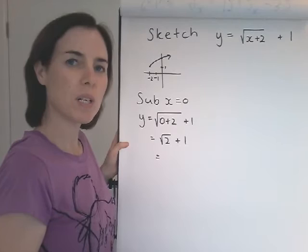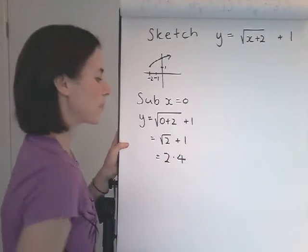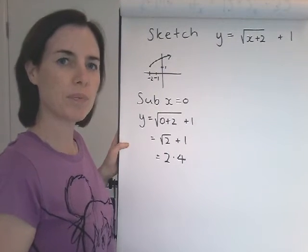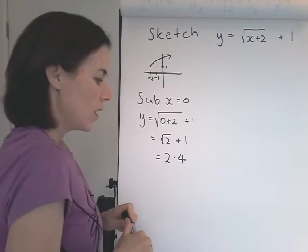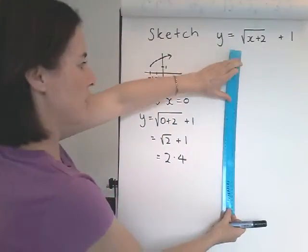It's usually best to leave the answer in exact form, but we need to be able to graph it as well, so we need to know what it is as a decimal. Put it in your calculator and to one decimal place it will be 2.4. So I'm ready to draw the graph now.